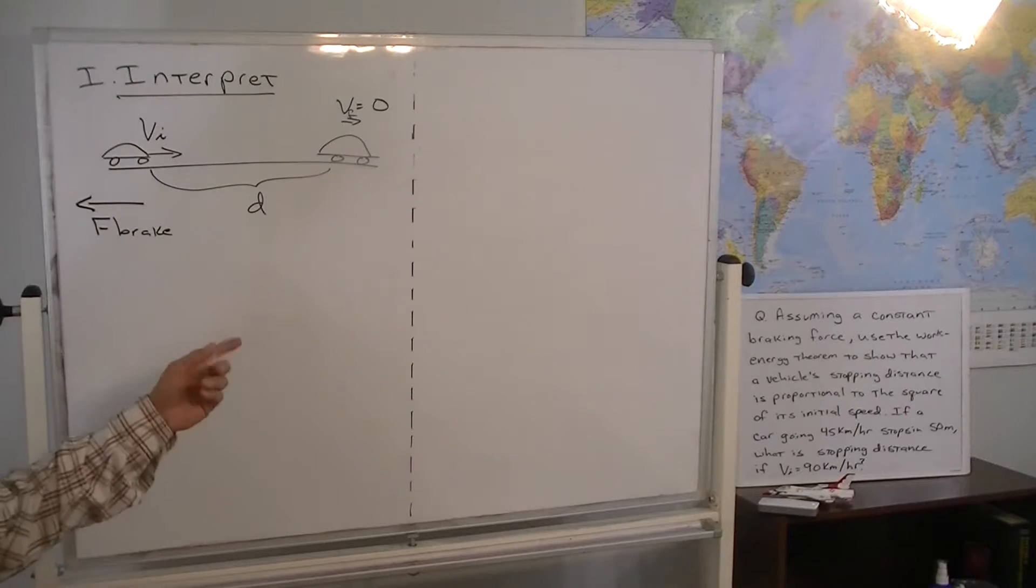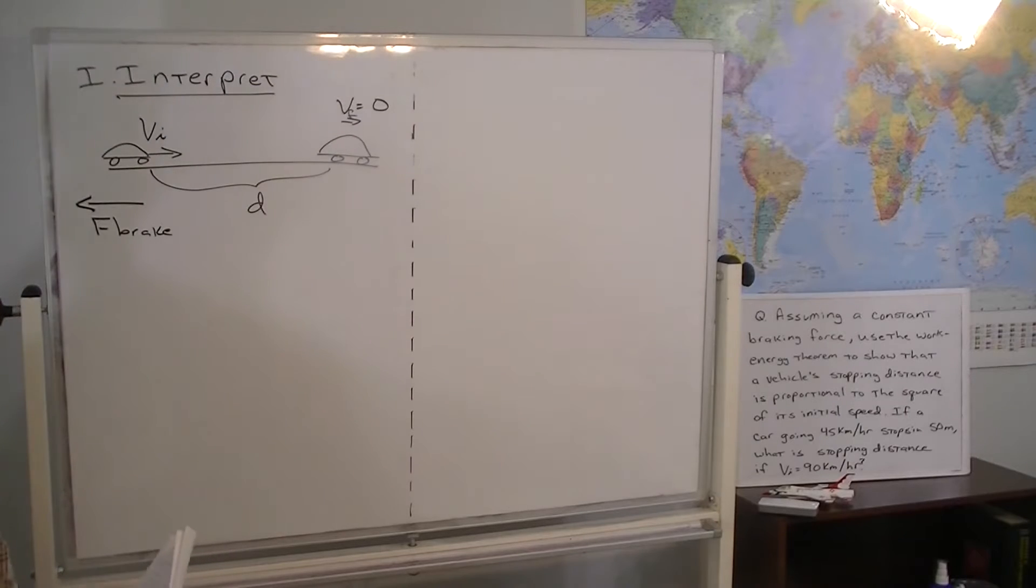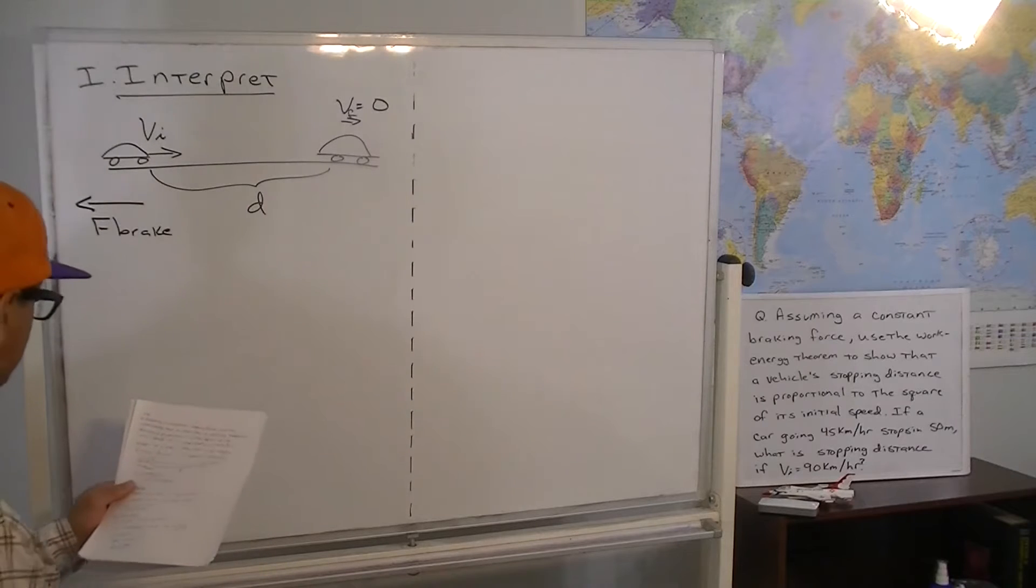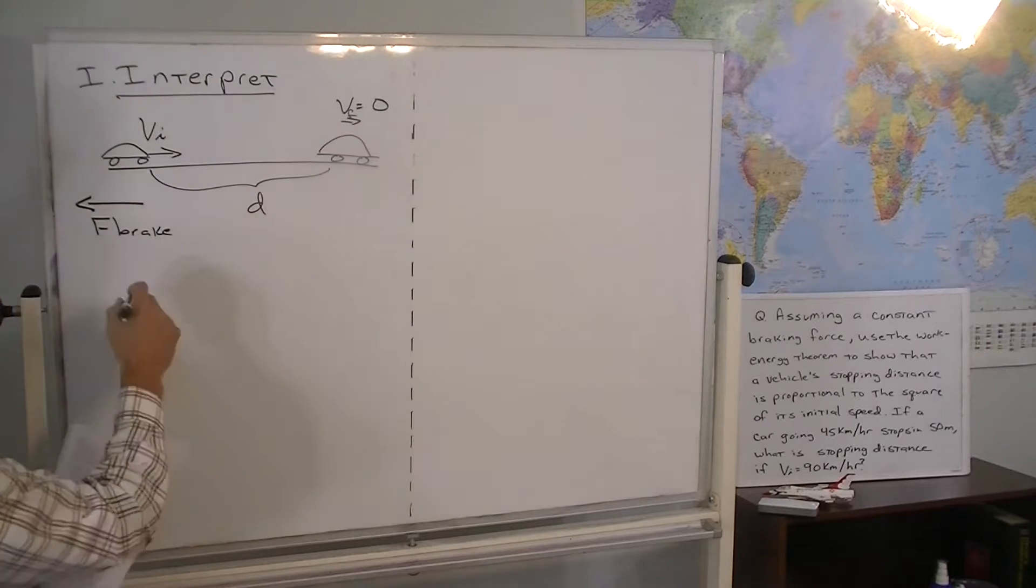Okay, so to interpret the problem, we want to draw a good picture. So if the car with initial velocity, final velocity is zero, stopping distance we call D, and there's a braking force that's in the direction opposite the motion while it's braking.